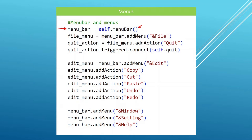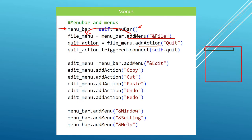Once we have the menu bar, we can add other menus — for example, adding a file menu. The add_menu method gives us a menu object we can manipulate. We can then add actions to our menu, which gives us an action we can manipulate later. Actions are things you can use to represent a user doing something in your application, such as a quit option.